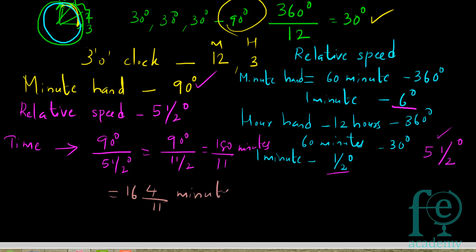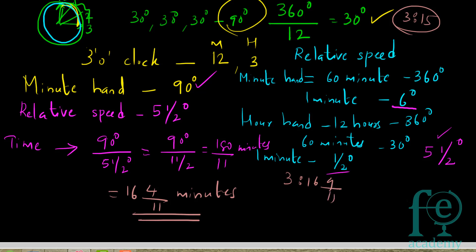So the hour hand and the minute hand will be coinciding at 16 4/11 minutes past 3. Usually people say they coincide at 3:15, but that is not the case — they actually coincide at 16 4/11 minutes past 3, i.e., at 3 hours 16 4/11 minutes.